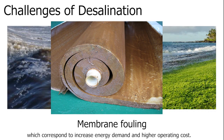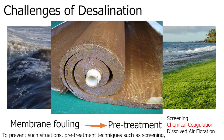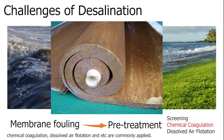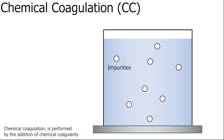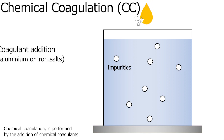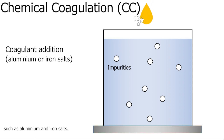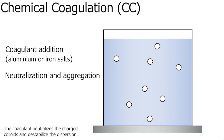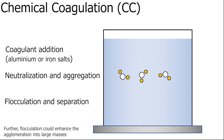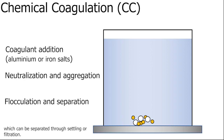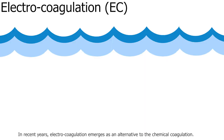Fouling corresponds to increased energy demand and higher operating costs. To prevent such situations, pre-treatment techniques such as screening, chemical coagulation, dissolved air flotation, and others are commonly applied. Chemical coagulation is performed by the addition of chemical coagulants such as aluminium and iron salts. The coagulant neutralizes the charged colloids and destabilizes the dispersion. Further flocculation can enhance the agglomeration into large masses, which can be separated through settling or filtration.